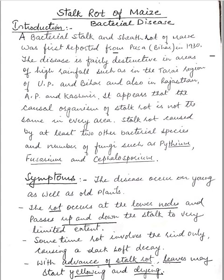A bacterial stock and sheath rot of maize was first reported from Pusa, Bihar in 1930. The disease is fairly destructive in areas of high rainfall, such as in the Tarai region of UP and Bihar, and also in Rajasthan, Andhra Pradesh, and Kashmir.